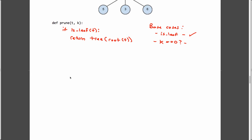What about when we're at a depth of 0? Well, if I'm at a depth of 0, then I want to do exactly the same thing. So, I want to return tree root t.